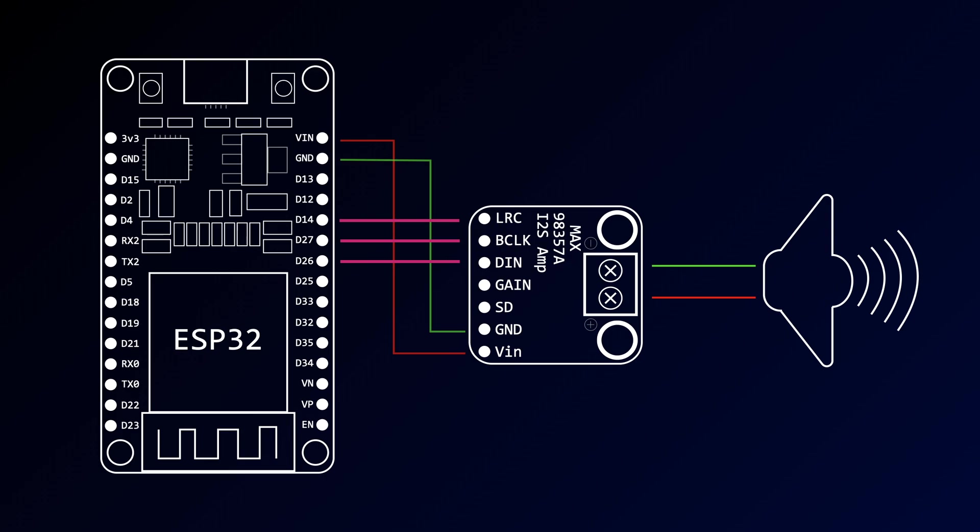You need to wire up the LRC, B-Clock and D-In lines. Be careful not to confuse the pin labeled SD with the serial data pin. This pin is actually the shutdown and channel select pin. Make sure to use the D-In pin for serial data.